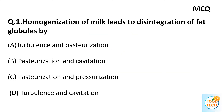Question 1: Homogenization of milk leads to disintegration of fat globules by: A. Turbulency and Parturization, B. Parturization and Cavitation, C. Parturization and Pressurization, D. Turbulency and Cavitation. Answer is D — Turbulency and Cavitation.